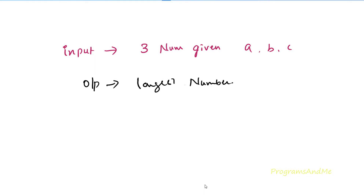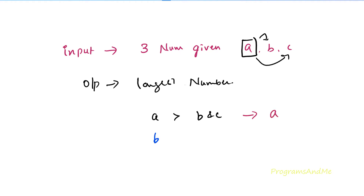So how to do this? First we need to check whether a is greater than b, and also whether a is greater than c. So the first condition is to check whether a is greater than both b and c. If it is true, that means a is the largest number. If not, we check whether b is greater than a and c. If that is true, b is the largest number. If both conditions are false, then c is the largest number. This is how we will write the program.